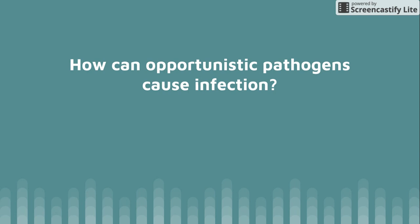How can opportunistic pathogens cause infection? Most opportunistic pathogens, if they're in their normal environment — their normal little homes — are not causing disease. But they get out of their normal environment and then they can cause disease just because they're not where they're supposed to be. Our gut and intestines is not a very clean location, so E. coli running around in there is fine. But our urinary tract is sterile — completely clean — so you get that microorganism in there and it's going to cause all kinds of problems. It's just out of its normal habitat and that's why it can cause infection.